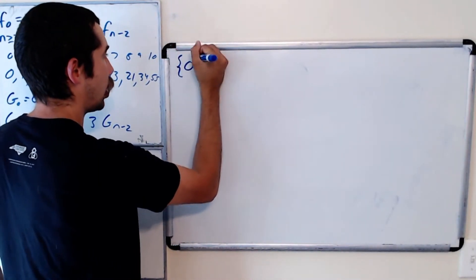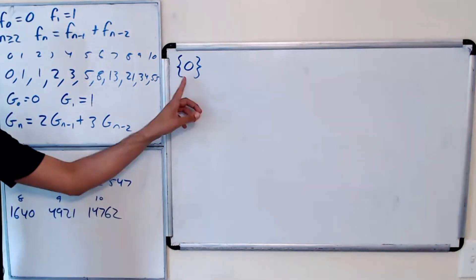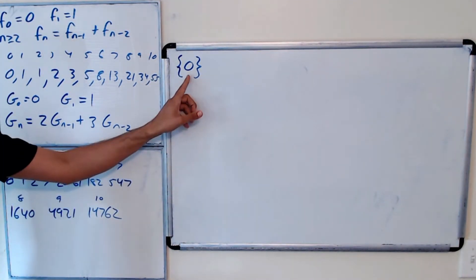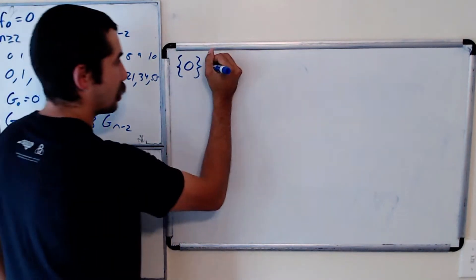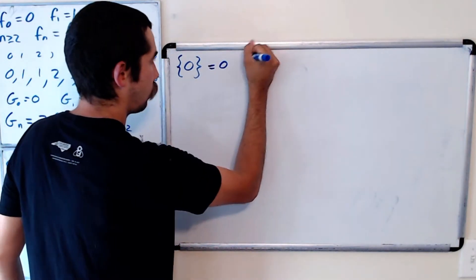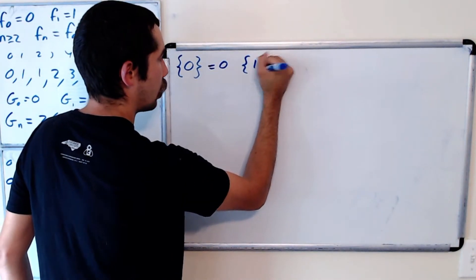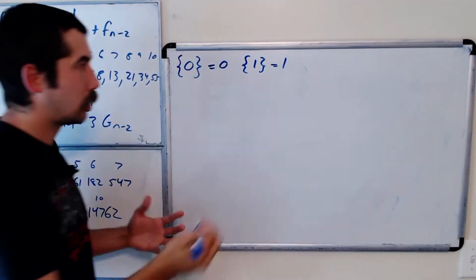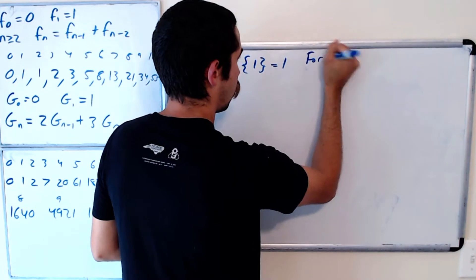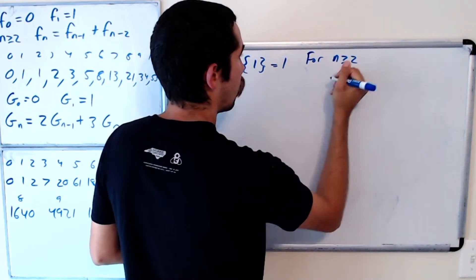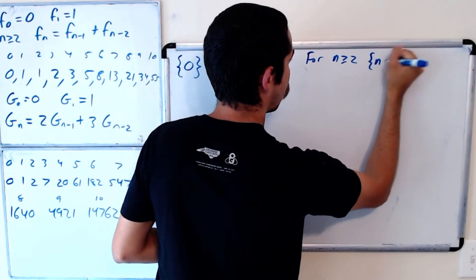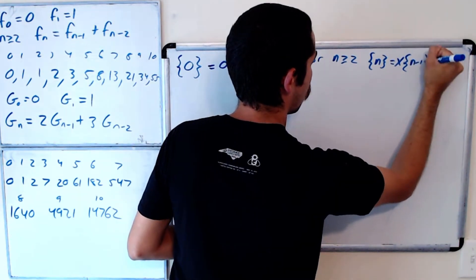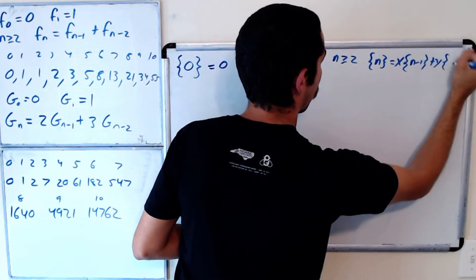Using the notation with curly brackets, {n} denotes the Lucas polynomial. So {0} equals 0, {1} equals 1, and for n greater than or equal to 2, {n} equals x times {n-1} plus y times {n-2}.